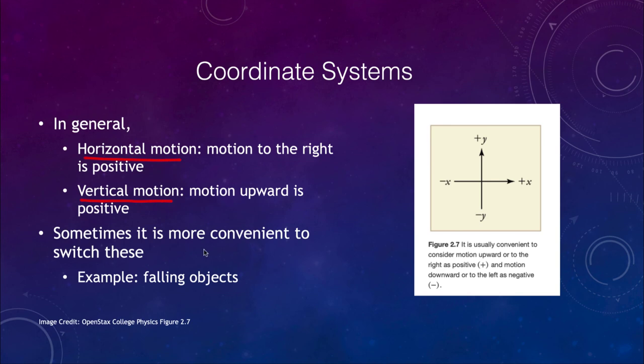However, sometimes it is more convenient to switch these around, and an example might be falling objects. So an object that is falling, it may be better to look at the downward motion as being positive and upward as being negative, and sometimes that makes the calculations easier.